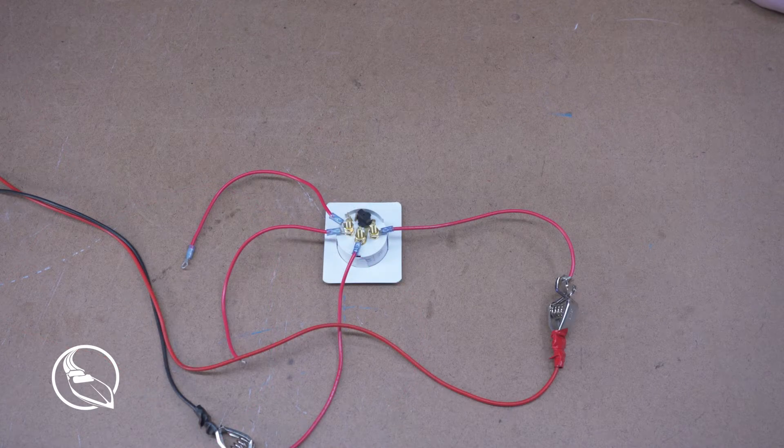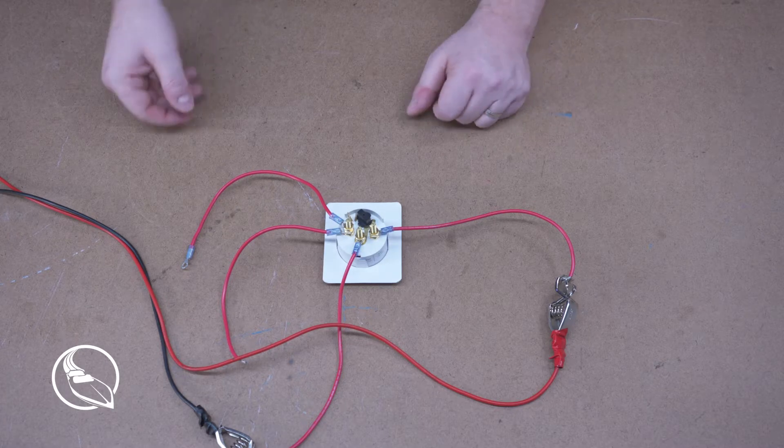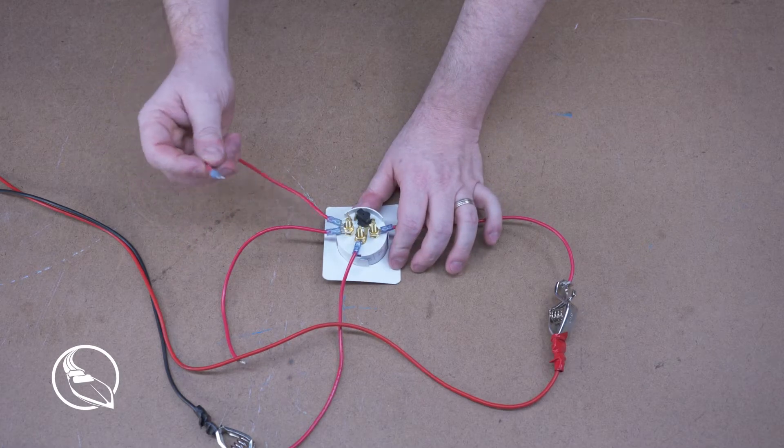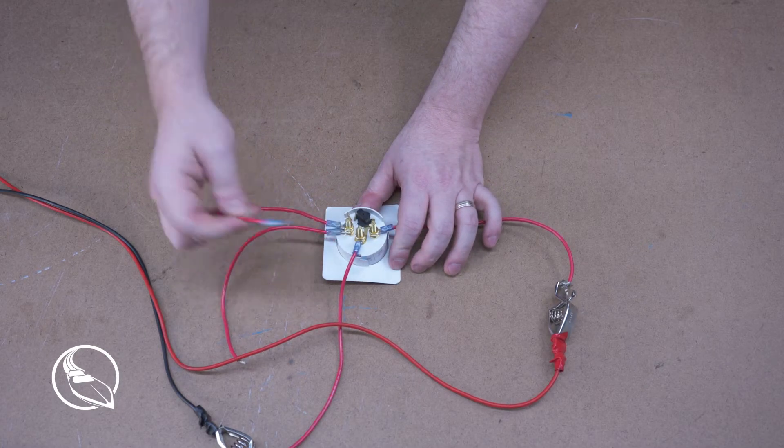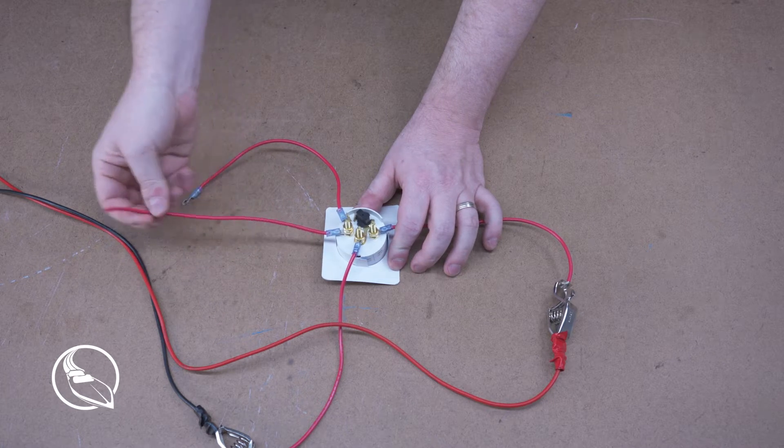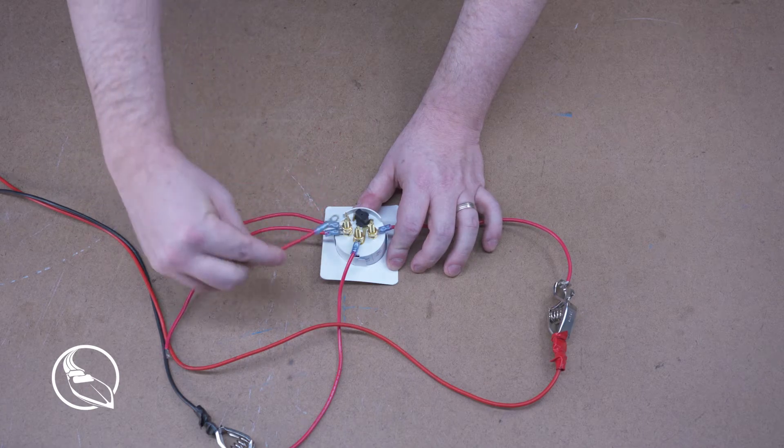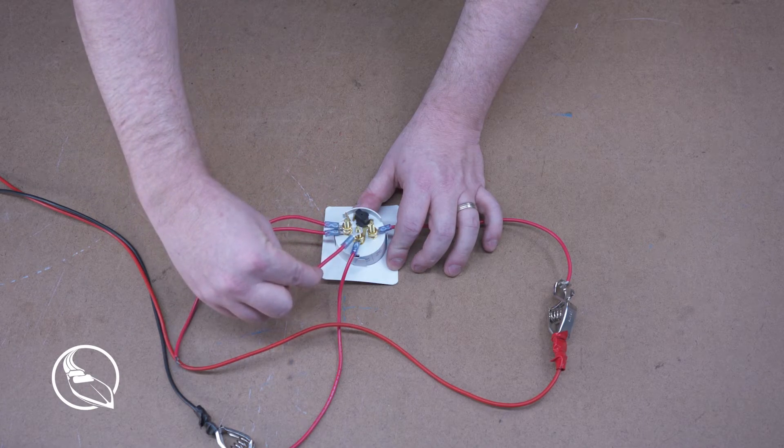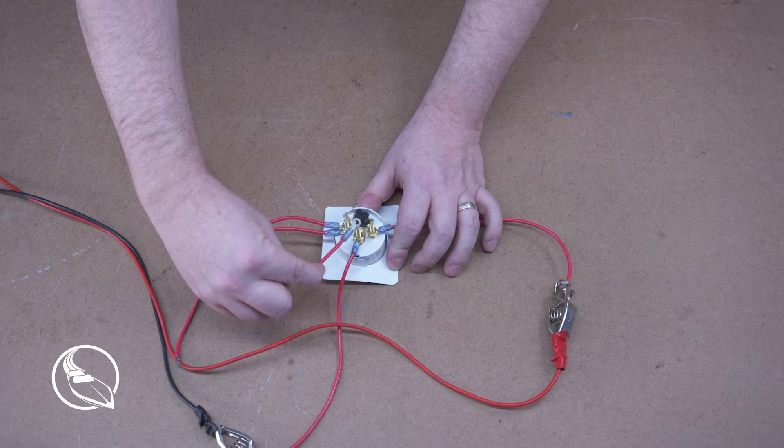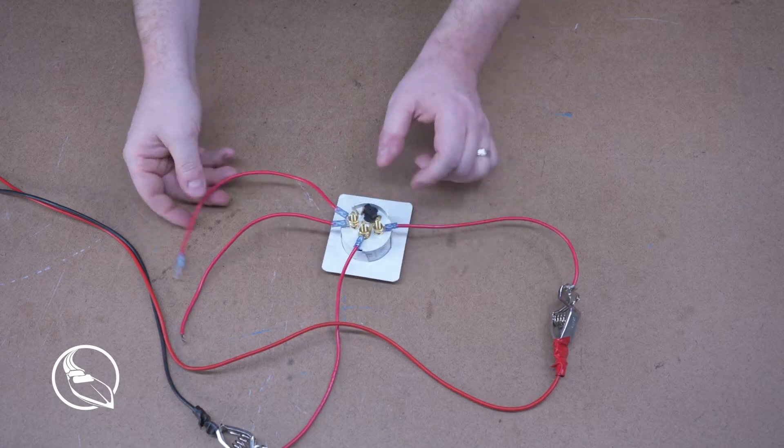So the next thing that we want to do is test to make sure that the gauge is functioning properly. And the way we're going to do that is by jumping the signal post to the ground. I've attached this jumper wire to do that. We've got this wire here that's normally going to be connected to the sender. So we've got our jumper wire, and I'm simply going to be touching this to the ground post here in the middle, and we're going to see if the gauge reacts to that. If it does, then we know we have a functioning gauge.